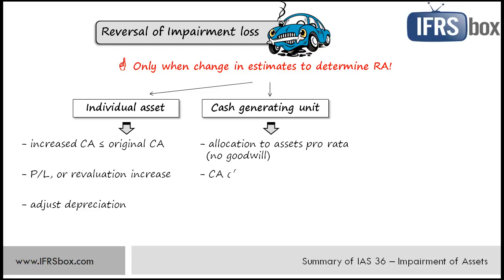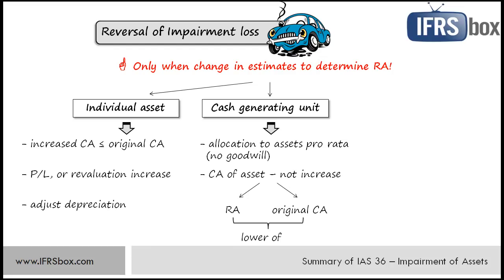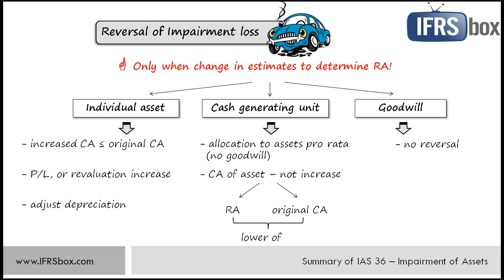The revised carrying amount of any asset cannot exceed the lower of its recoverable amount or the carrying amount that would have been determined without any impairment loss. If the reversal is even greater, then no full reversal is recognized. Finally, an impairment loss recognized for goodwill shall not be reversed in subsequent periods.